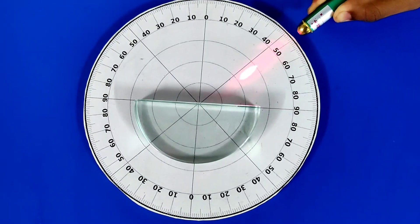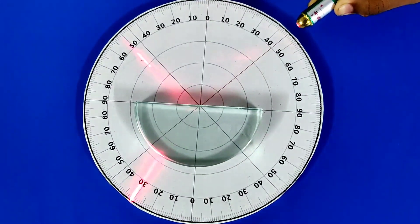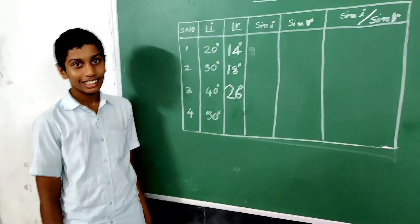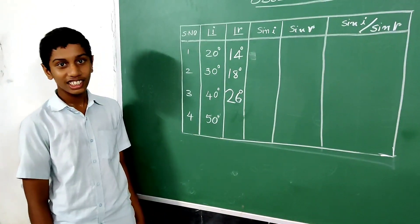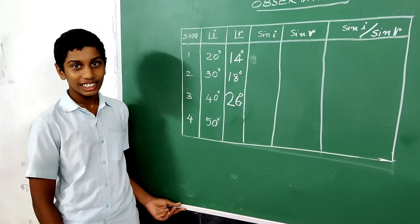Angle of refraction 32 degrees for 50 degrees. Here angle of refraction for 50 degrees is 32 degrees.